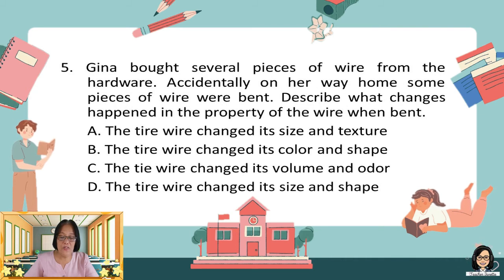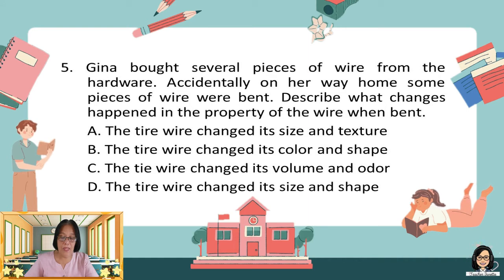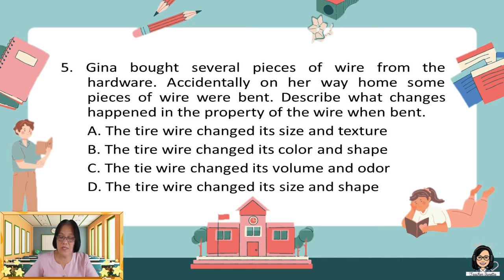Number five: Gina bought several pieces of wire from the hardware. Accidentally, on her way home, some pieces of wire were bent. Describe what changes happened in the property of the wire when bent. A. The wire changes its size and texture. B. The wire changes its color and shape. C. The wire changes its volume and odor. D. The wire changes its size and shape.